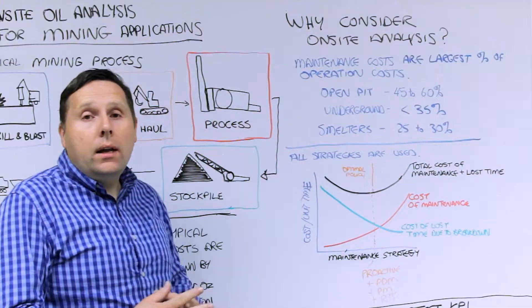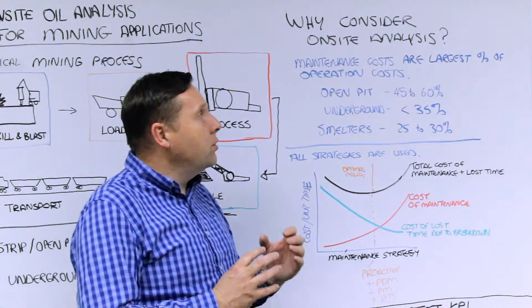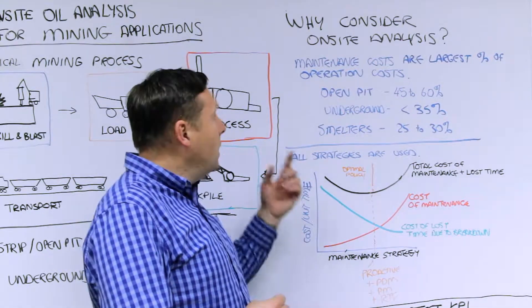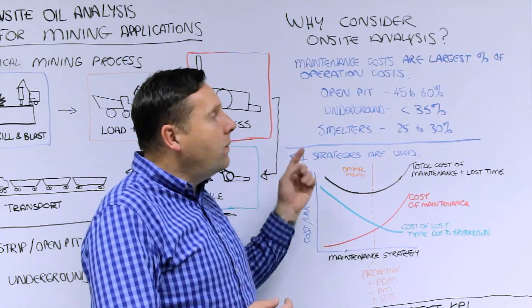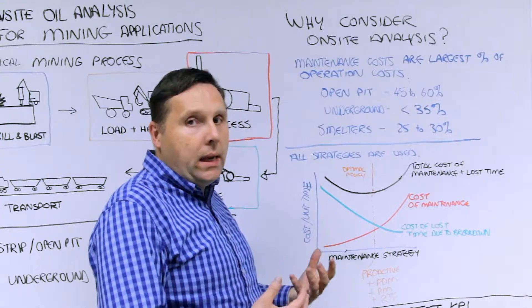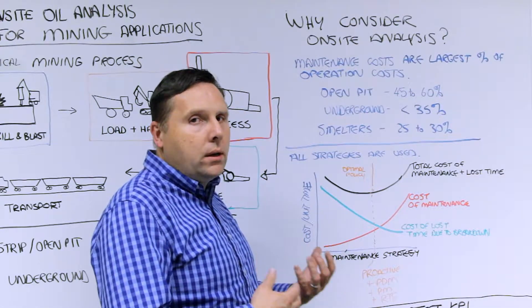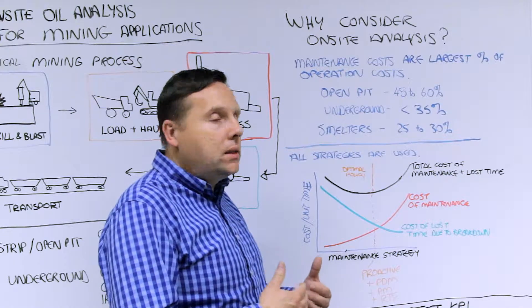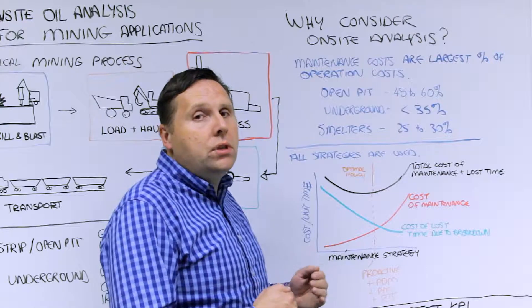Why consider on-site oil analysis? Well, as we said, maintenance costs are the largest percentage of those operation costs that we just described. So for open pit mining, because it's heavily intensive with capital equipment, you could be talking between 45% and 60% of the cost of extraction is maintenance costs. Underground, it's typically less than 35% because the products and the equipment is different. Smelters and some first processing can be maybe 25% to 30%.